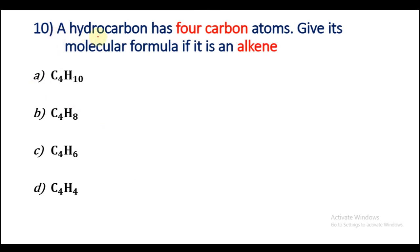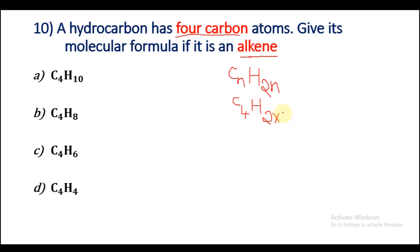Question number 10: A hydrocarbon has 4 carbon atoms. Give its molecular formula if it is an alkene. We know the general formula for alkenes is CnH2n. Since there are 4 carbon atoms, n = 4, so H = 2×4 = 8, giving us C4H8. Searching the options, it is option B. So B is the right answer.